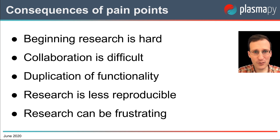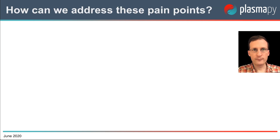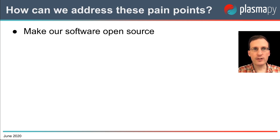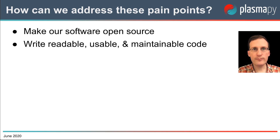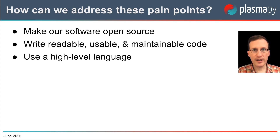But there is no reason why these pain points have to exist. We can begin addressing them by making our software open source and available for others to use, modify, and redistribute. We can emphasize writing clean code that is readable, usable, and maintainable. Using a high-level language like Python helps facilitate readability.